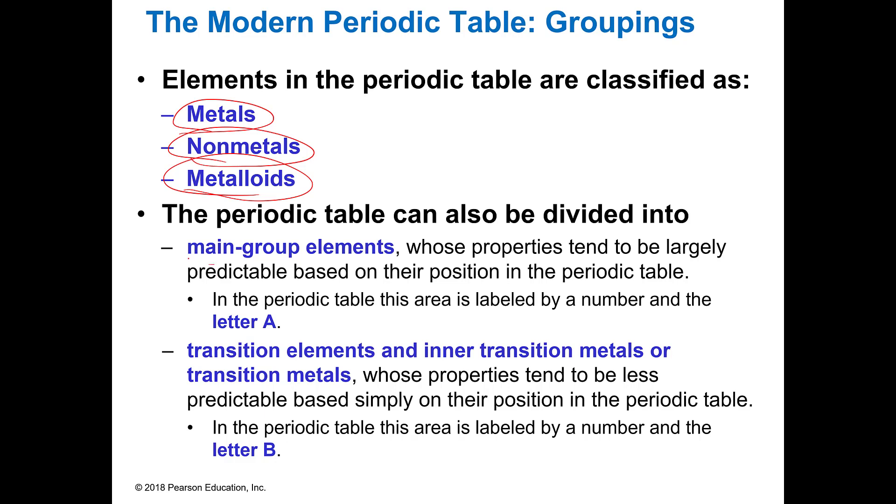The periodic table we also divide into something we call main group elements and those are the ones that are very predictable. Then we have transition elements and inner transition metals, whose properties aren't as predictable just because of how their electrons are ordered. When you see them on a periodic table they're going to have like a designation of B where your normal ones are going to have A's.